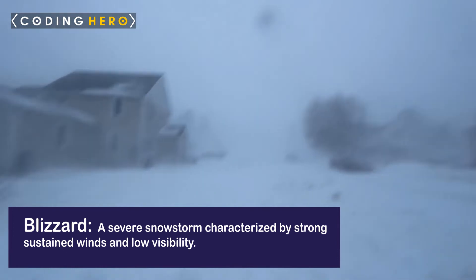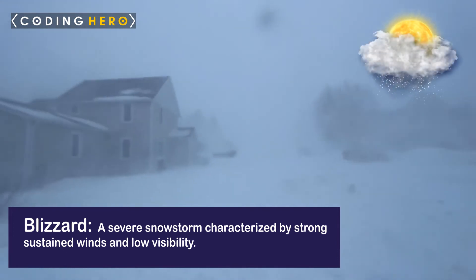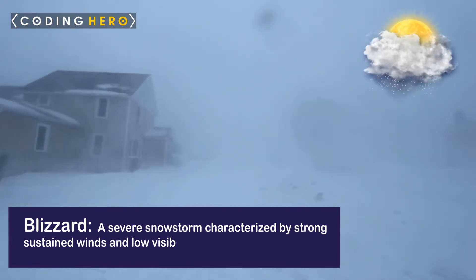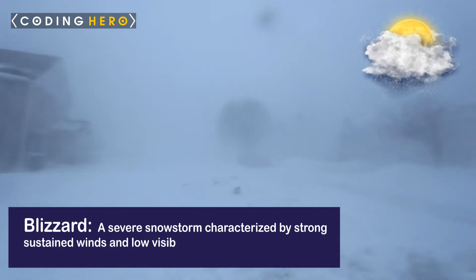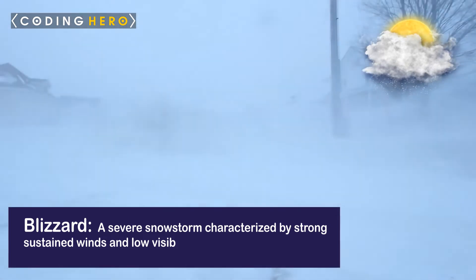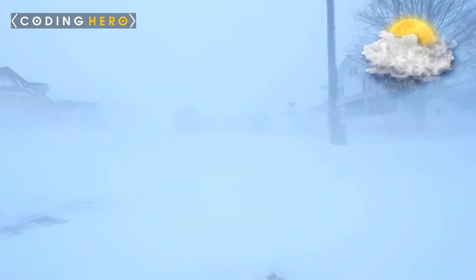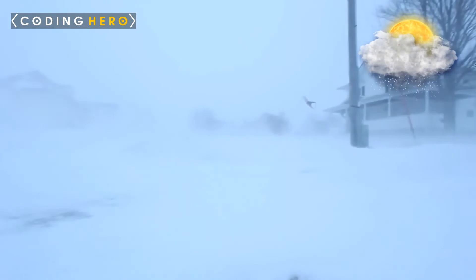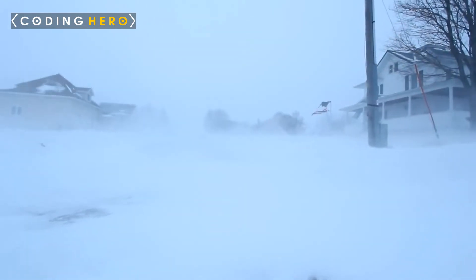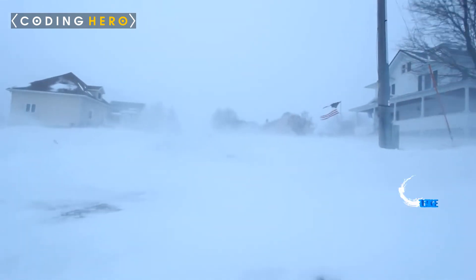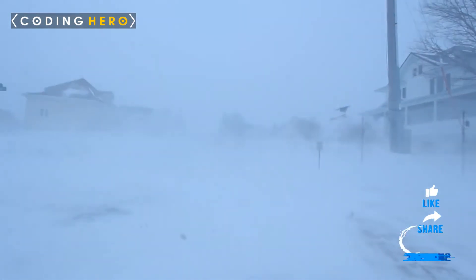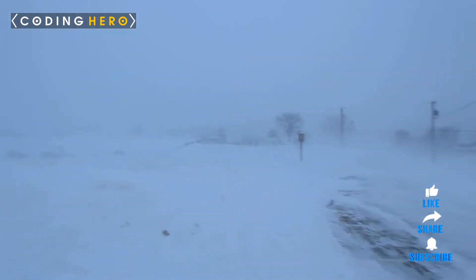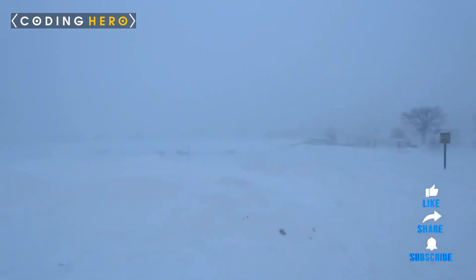Blizzard. A blizzard is a severe snow storm characterized by strong sustained winds and low visibility, where snow is not falling but loose snow on the ground is lifted and blown by strong winds. Blizzards can have an immense size and usually stretch to hundreds or thousands of kilometers.